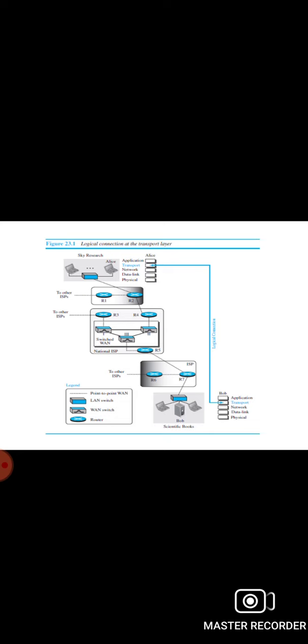The data link layer is responsible for delivery of frames between two neighboring nodes over a link, and this is called node-to-node delivery. The network layer is responsible for delivery of datagrams between two hosts, and this is called host-to-host delivery. Communication on the internet is not defined as the exchange of data between two nodes or between two hosts. Real communication takes place between two processes, that is application programs. So we need process-to-process delivery.